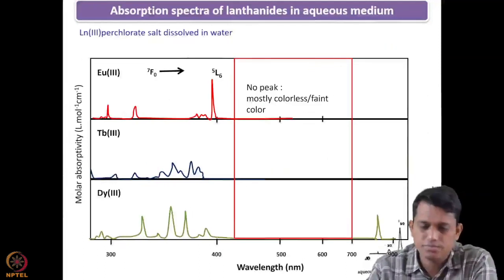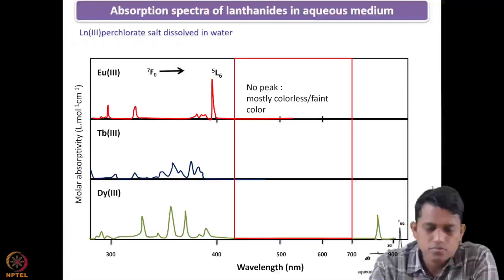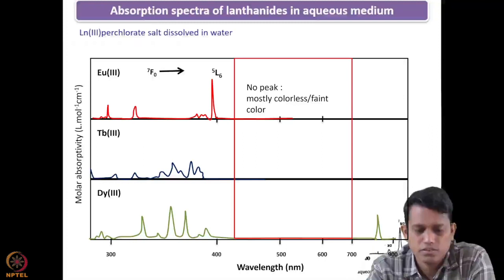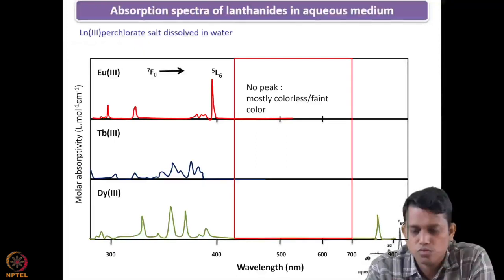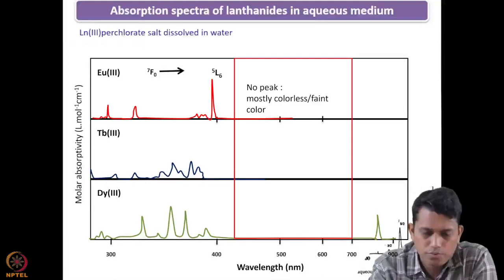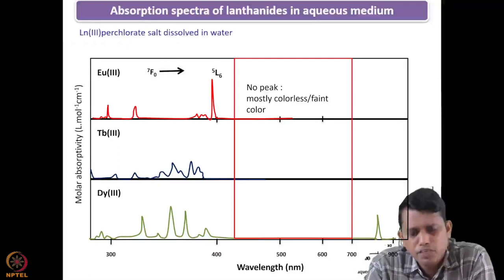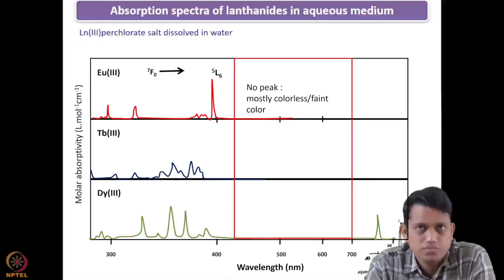In a very similar way you can see the spectra of Europium³⁺. There is a very important peak — a transition from 7F₀ to 5L₆ — which occurs around 394 nm. This is one of the most prominent peaks in the Europium³⁺ spectrum. We will come back to this peak when we discuss luminescence spectroscopy.